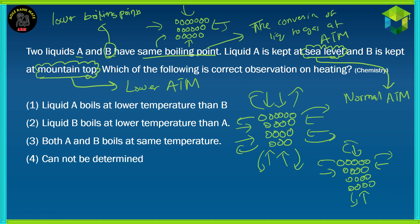Looking at the options, we can cancel option 4 — 'cannot be determined' — because we just determined what would happen on heating both liquid A and B. Option 3 is incorrect because it says both A and B boil at the same temperature, which is false. Option 1 is incorrect as it says liquid A boils at a lower temperature than B. So the correct answer is: liquid B boils at a lower temperature than A.